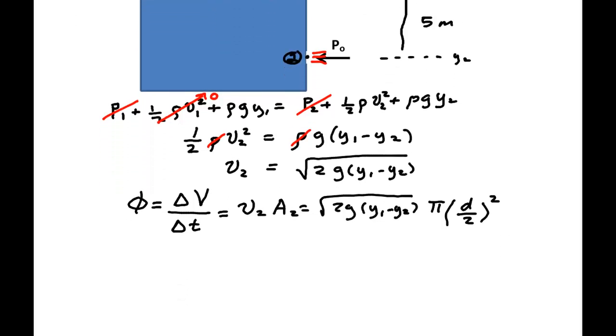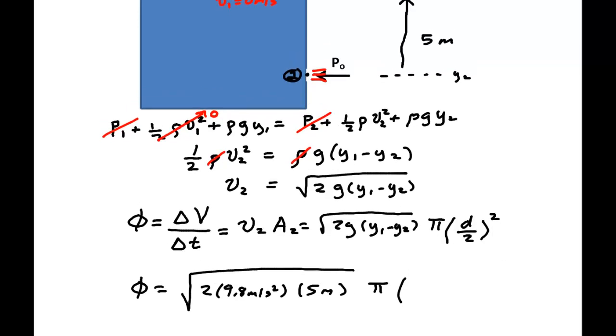We now need to put in our values for this. So our flux is the square root of 2 times 9.8 meters per second squared, times 5 meters. We have pi. And then to be consistent throughout this, we need to choose some units that are corresponding.